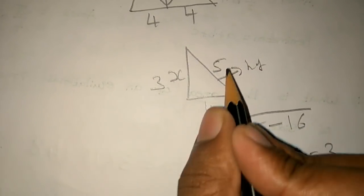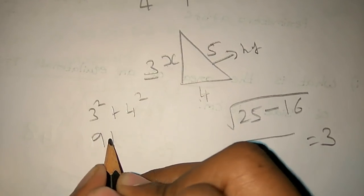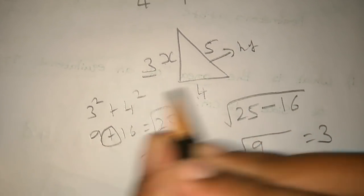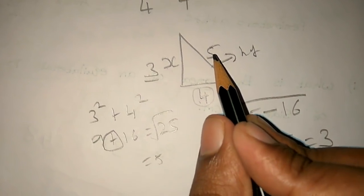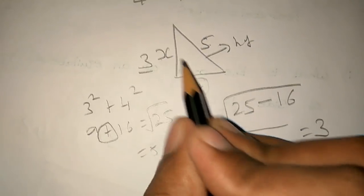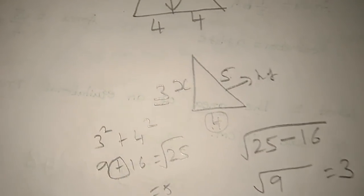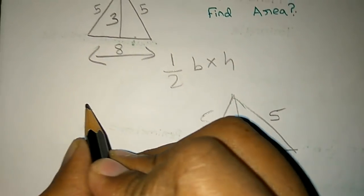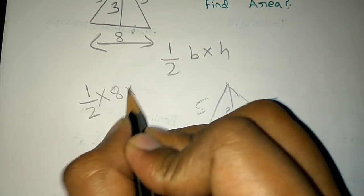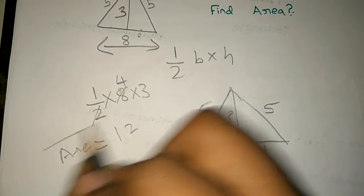If we want to find the hypotenuse, we add two squares. For example, 3² plus 4² equals 9 plus 16 equals 25. Taking the root, √25 = 5. For another example, if hypotenuse is 5 and one side is 3: 25 minus 9 equals 16, so the other side is 4. The height is 3, so the area is ½ × 8 × 3 = 12 square meters.